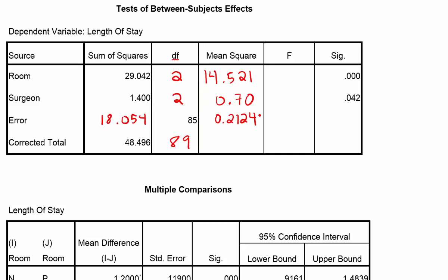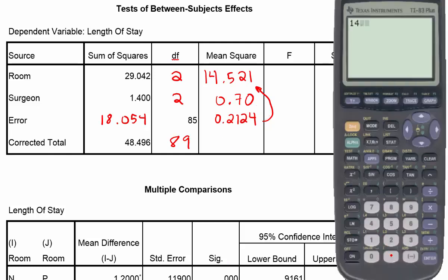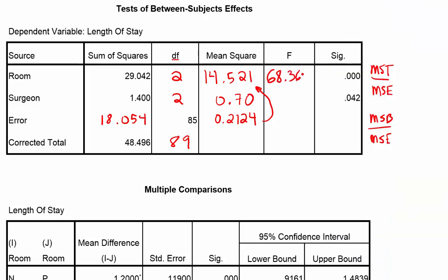Next we determine our F test statistics for both the treatment and the blocks. The formula is MST divided by MSE for the treatment F stat, and MSB divided by MSE for the blocks. Working from the top down, we do the MST divided by MSE first: 14.521 divided by 0.2124 gives us 68.366.